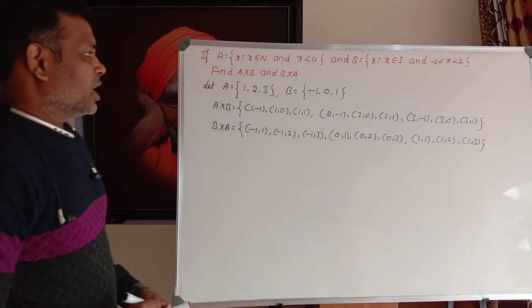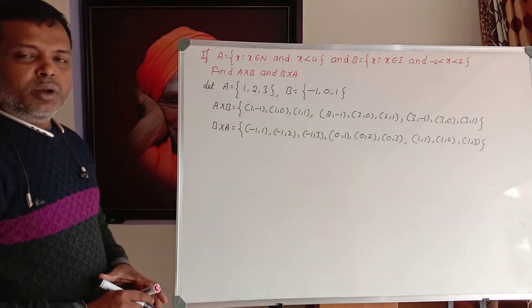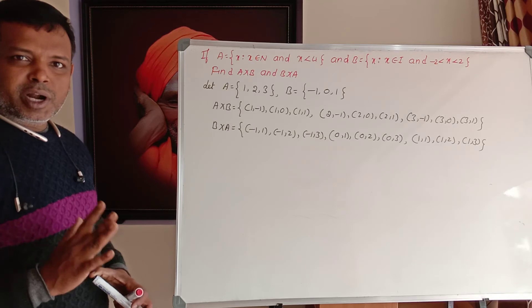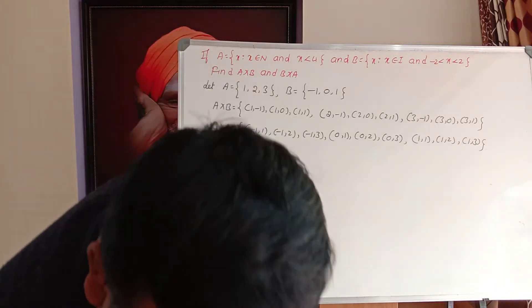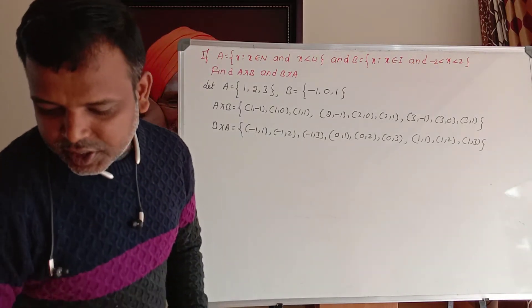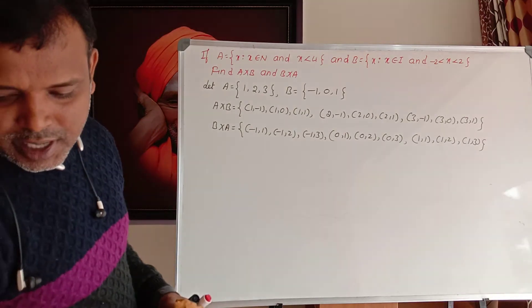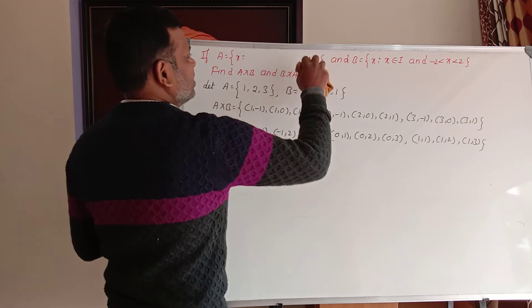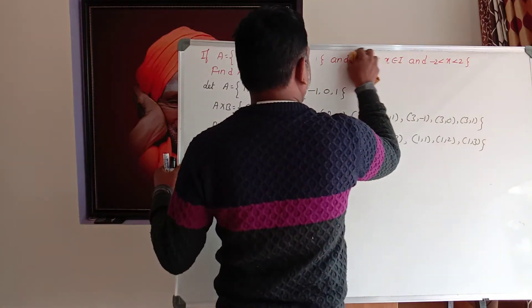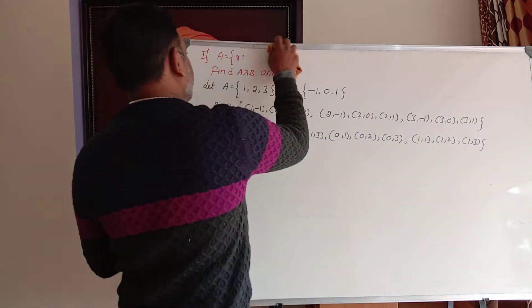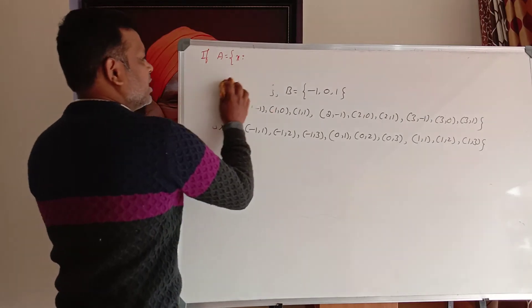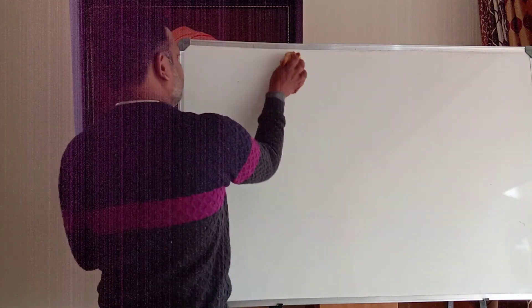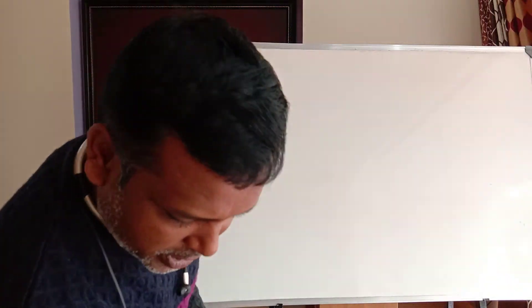Got it? So the rule method converts to the tabular method. The next problem: A is equal to x such that the equation is satisfied. Let me show you — it is very simple.